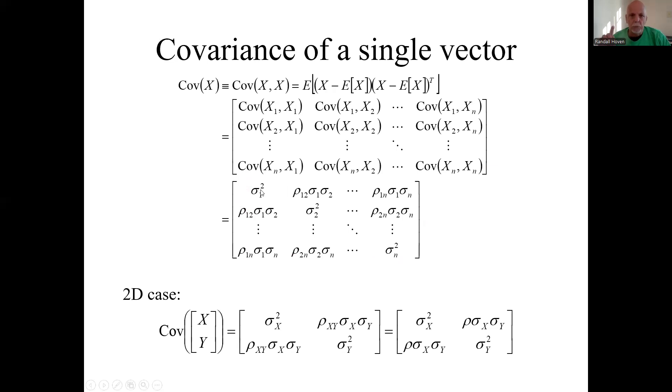I should point out here: if all the individual elements, all the individual random variables are independent of each other, then all these correlation coefficients would be zero and all you'd have is a diagonal matrix. All the variances down the main diagonal, and this would be a square matrix, and all zeros off the main diagonal. That's if everything's independent of each other.